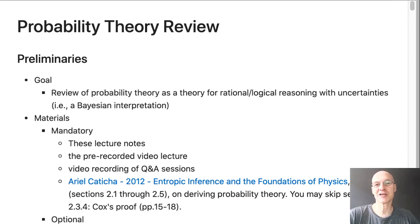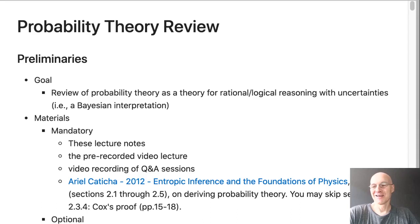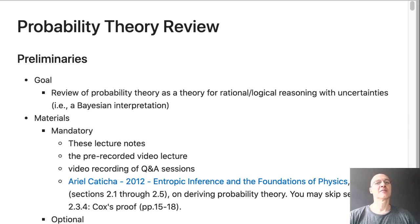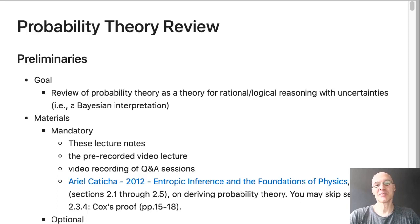Hello everyone, this is Berthe Fries and this is the Bayesian Machine Learning and Information Processing class. Today we're going to talk about probability theory. Probability theory is a branch of mathematics that all of you have had in high school and then later on in your bachelor program and maybe even once more in one of your graduate classes. So there shouldn't be anything new in this class other than the interpretation of probability theory, because that's the most important thing we're going to be talking about here today.